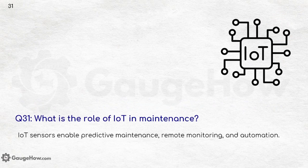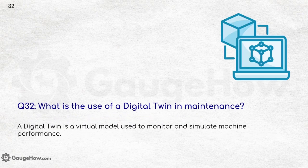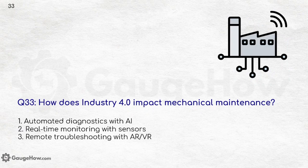What is the role of IoT in maintenance? IoT sensors enable predictive maintenance, remote monitoring, and automation. What is the use of a digital twin in maintenance? A digital twin is a virtual model used to monitor and simulate machine performance. How does Industry 4.0 impact mechanical maintenance? Automated diagnostics with AI, real-time monitoring with sensors, and remote troubleshooting with AR or VR.